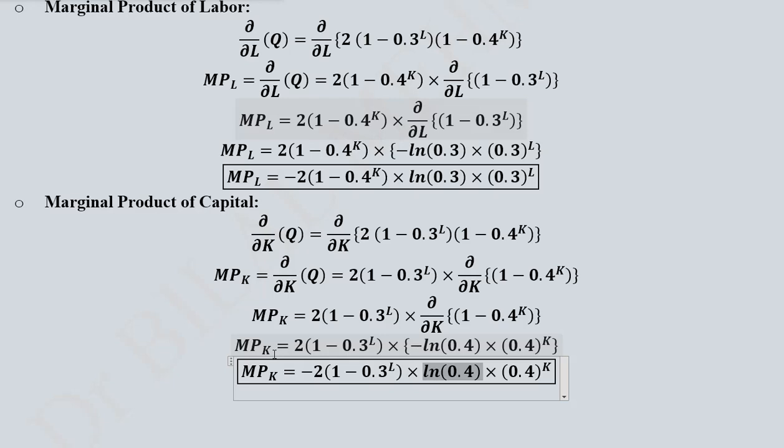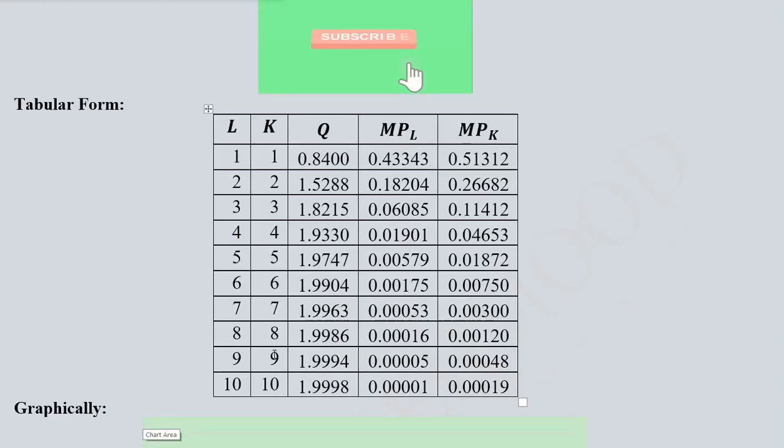Now in order to ascertain these things we have this tabular form. We have found various values of the production function and the marginal products, that is MP_L and MP_K. We have all these values based upon various values of labor and capital.